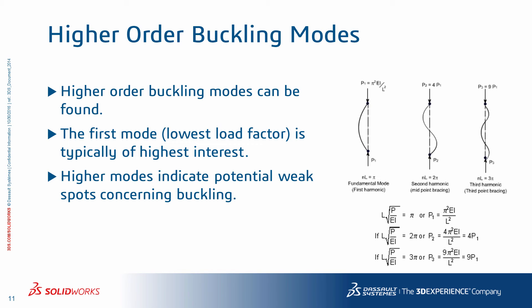As shown for a pinned beam on both ends, higher-order buckling modes can be found. The first mode — that is, the one with the lowest load factor — is typically of highest interest. If the structure buckles or fails at lower loads, you are probably not concerned beyond that. However, studying higher modes at times may be useful, indicating potential weak spots in the model as far as buckling is concerned.